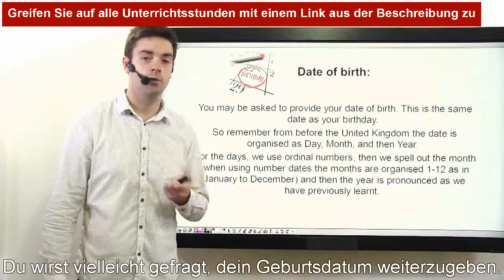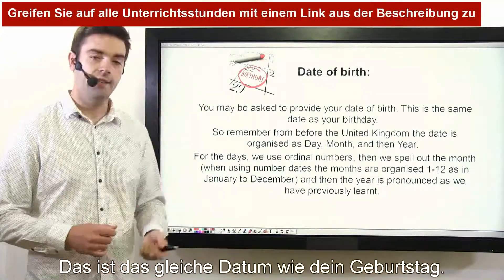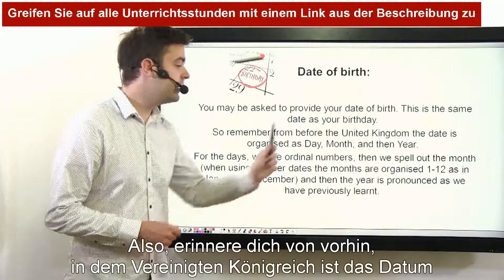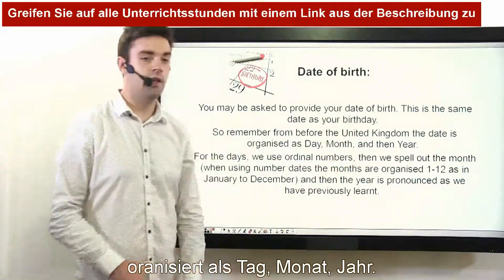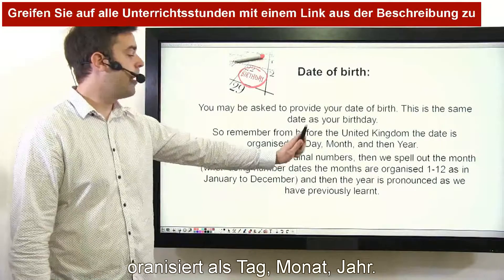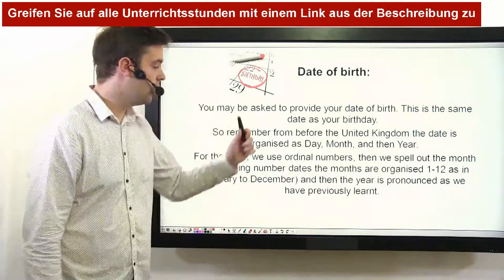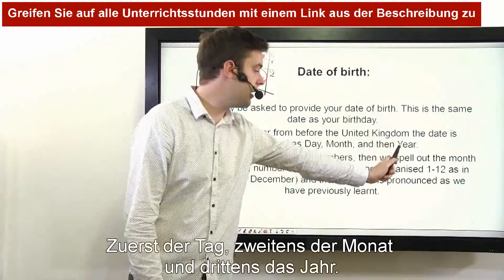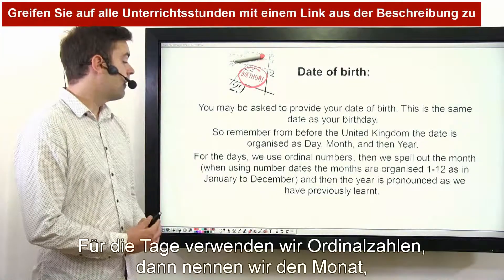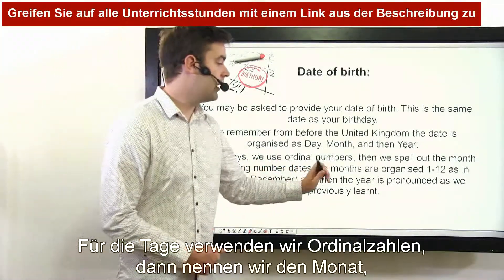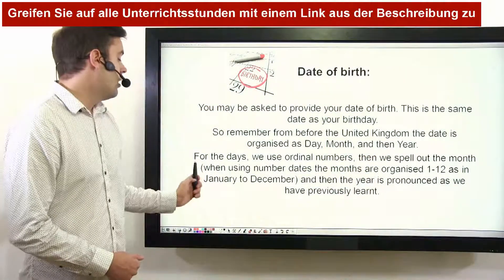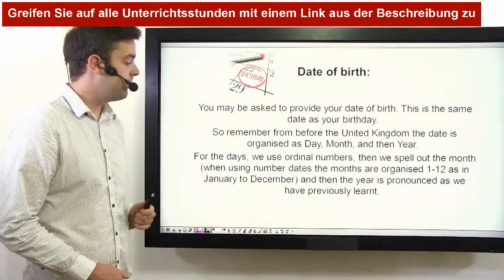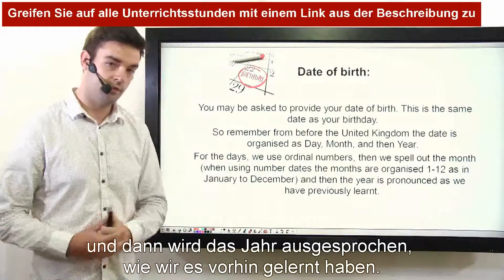You may also be asked for your date of birth, which is the same date as your birthday. In the United Kingdom, the date is organized as day, month, year. First is the day, second is the month, and third is the year. For the days, we use ordinal numbers, and then we spell out the month. When using number dates, the months are organized 1 to 12, as in January to December, and the year is pronounced as previously learned.